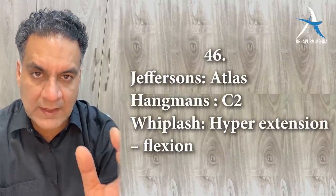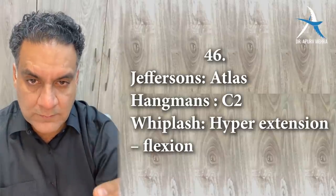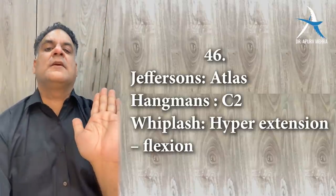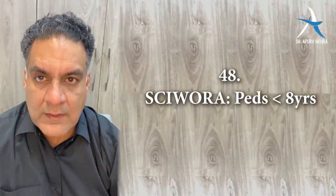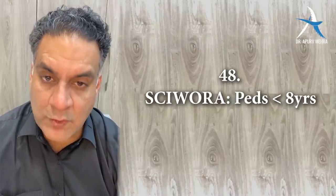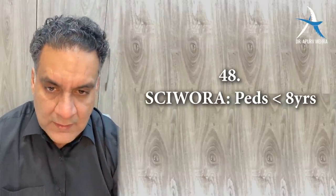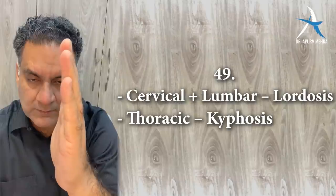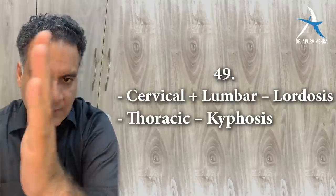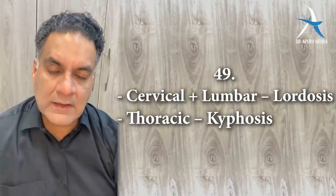Point number forty-six: Jefferson's fracture involves C1 (the atlas). The Hangman's fracture involves C2. Whiplash injury is a hyperextension followed by flexion injury. Point number forty-seven: motorcyclist or hinge fracture is a separation of the skull into anterior and posterior halves. Point number forty-eight: SCIWORA — spinal cord injury without obvious radiological abnormality — is a pediatric injury where no abnormality is seen on X-ray but the child has a neurological deficit. Point number forty-nine: cervical spine has a lordosis, thoracic has kyphosis, lumbar again lordosis.